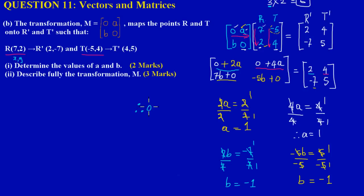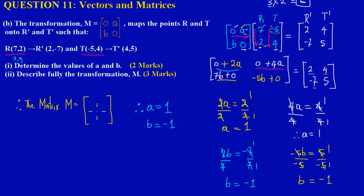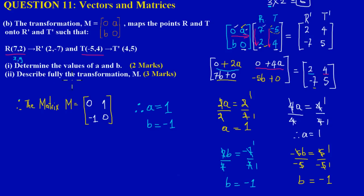Therefore, a = 1 and B = -1. Substituting back, the matrix M that maps the object points onto their corresponding image points is [0, 1; -1, 0]. In part two, we'll describe fully the transformation that is occurring.